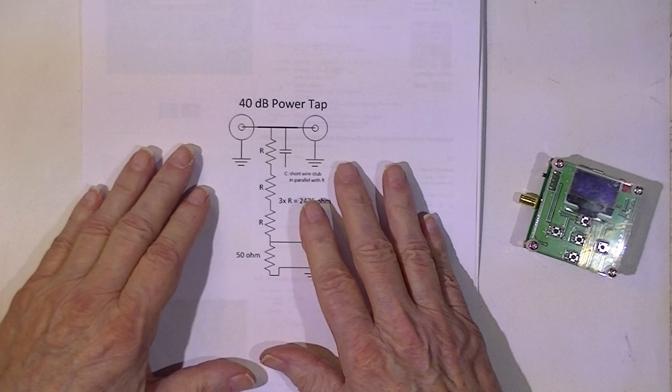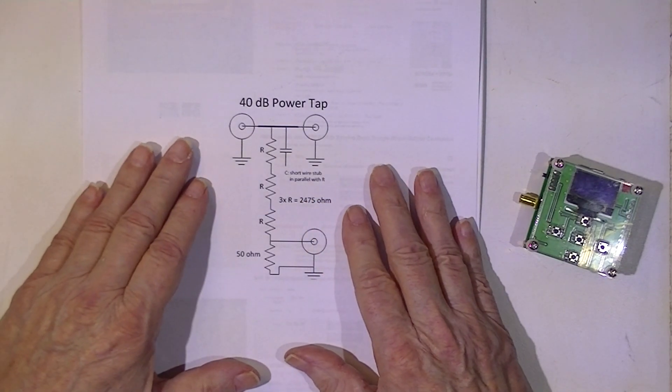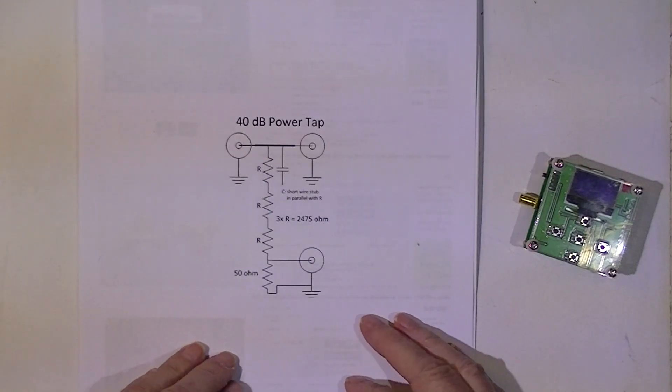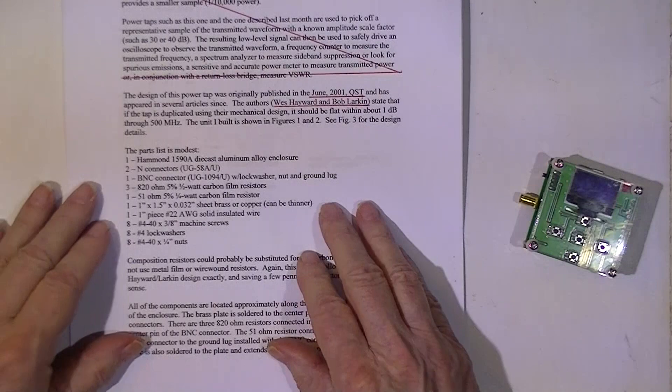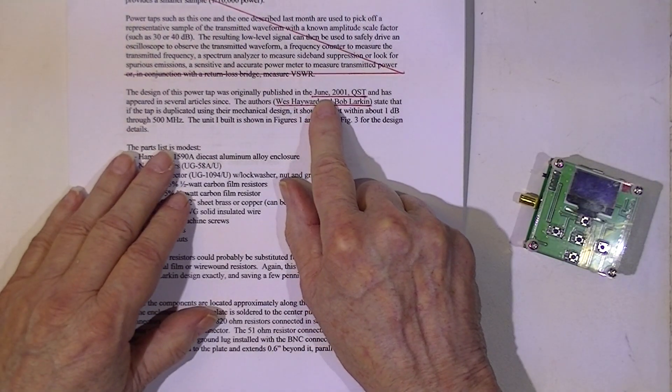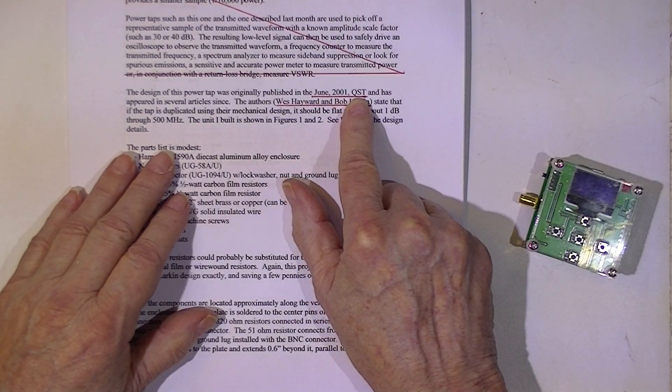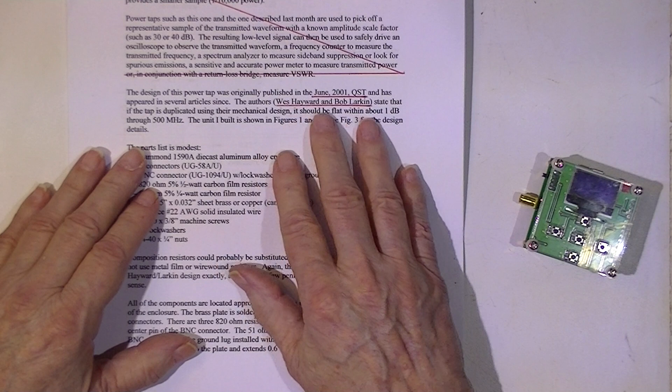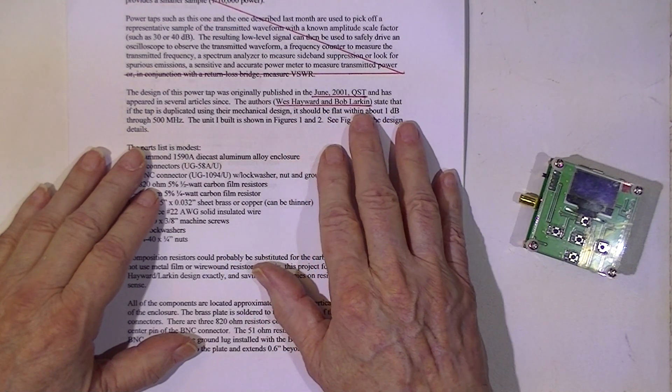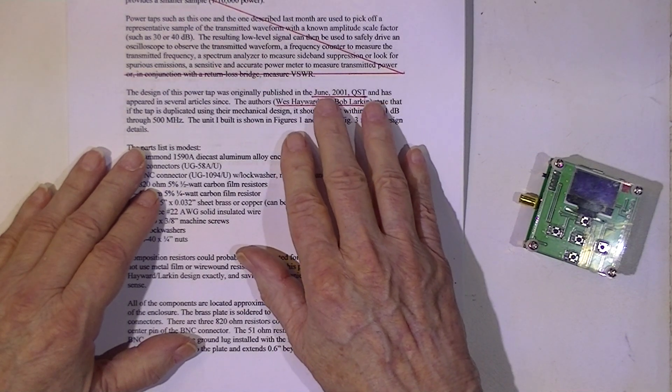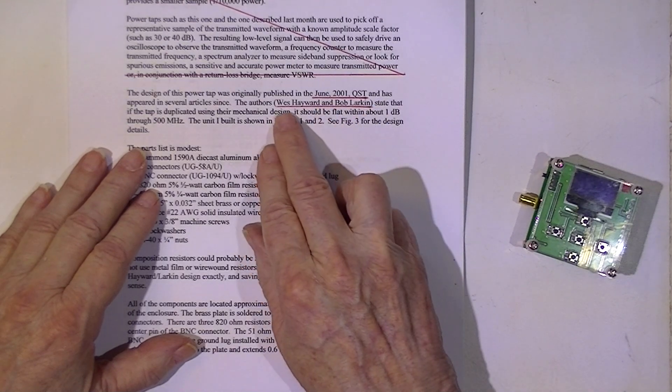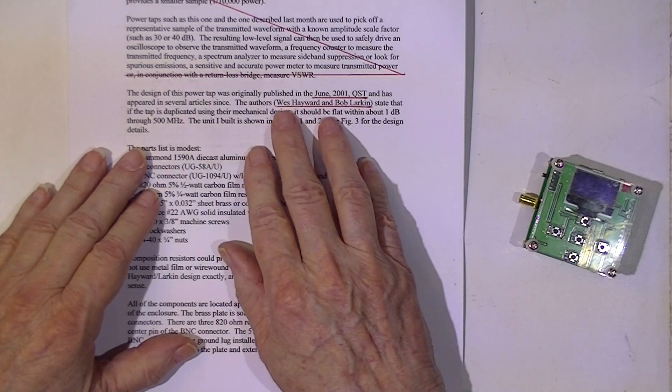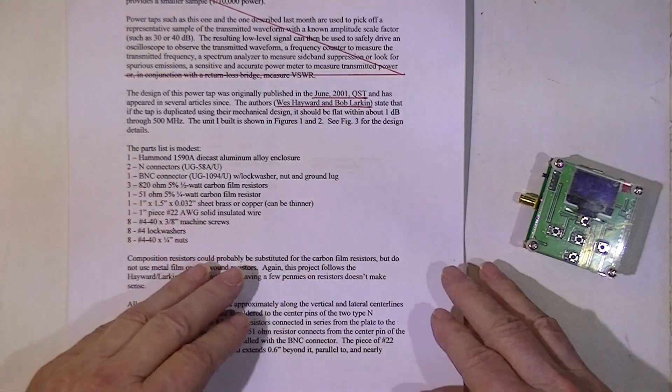What turns out is that 40 dBm power tap is a very popular selection. The web is full of 40 dB power taps. They all seem to have the same genesis, and that is an article published in June 2001 in the ARRL, or Amateur Radio Publication, QST. The authors of the article are Wes Hayward and Bob Larkin. Wes Hayward is a very well-known person in the RF world.